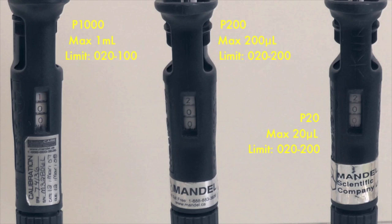For P20, the dial at 200 indicates 20.0 microliters, and 020 indicates 2.0 microliters.